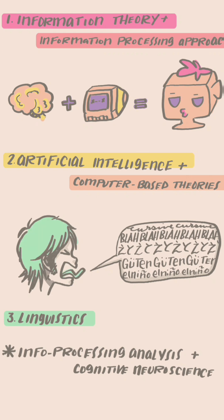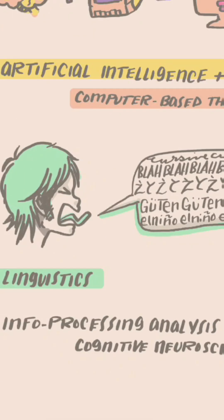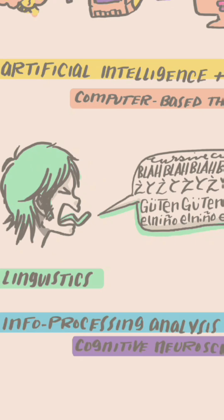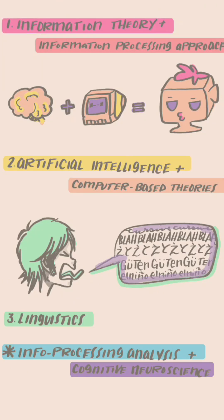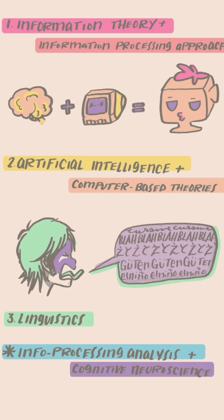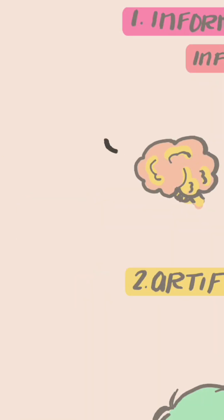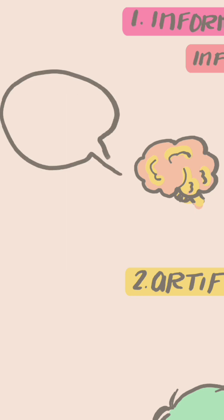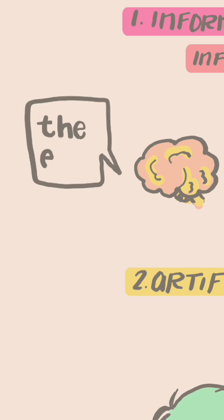Noam Chomsky completely dissed behaviorists. Information processing analysis basically breaks down any cognitive task into smaller bite-sized pieces. Cognitive neuroscience is especially concerned with the neural connections in your brain and how they relate to mental processes. It's the future of cognitive psychology.